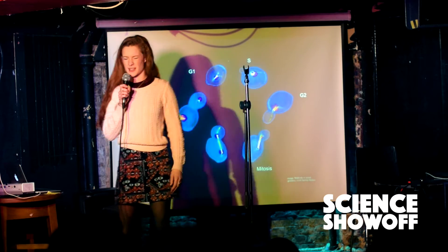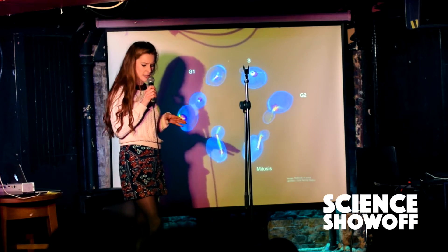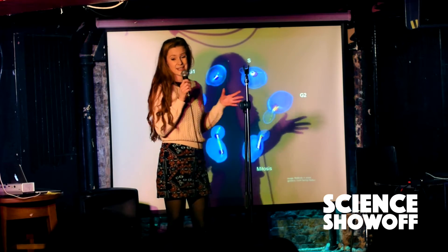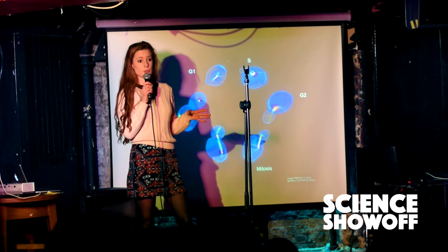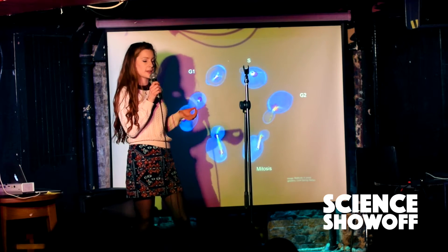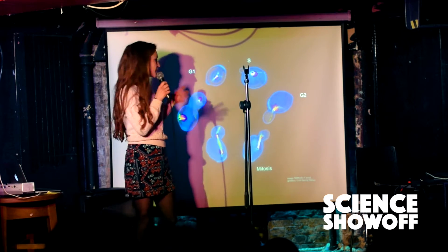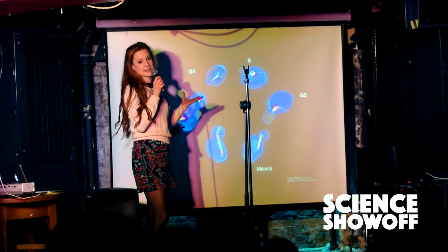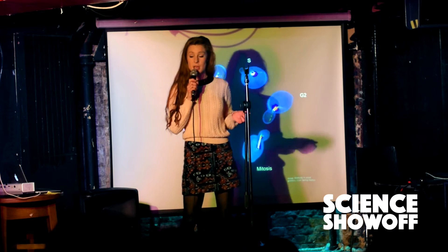Let's say you get up in the morning, you get up on the wrong side of the bed, you get your knickers in a bit of a twist. What do you do? What does a cell do when it gets its knickers in a twist when it can't segregate its DNA properly into two new daughter cells? Well, it can do three things.